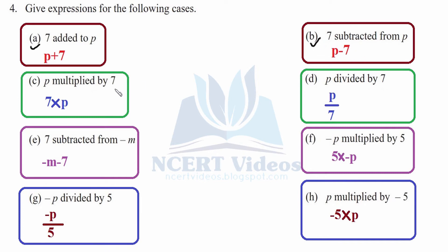C part: p multiplied by 7. The variable part has to be written first, and then what is getting multiplied afterwards. D part: p divided by 7. In case of division, we write as it is, as we say — so p is divided by 7. It is simple for division.